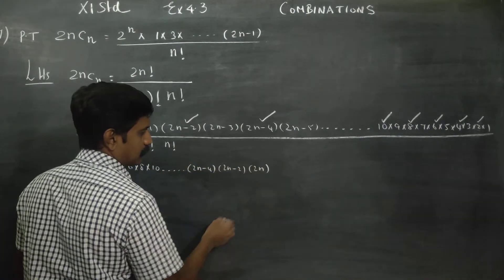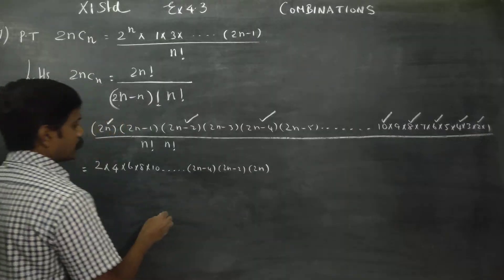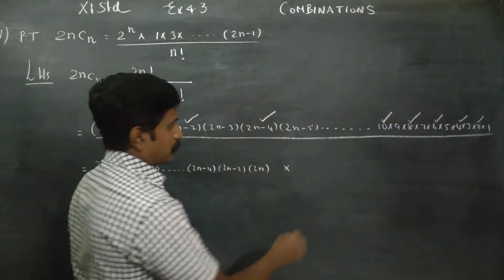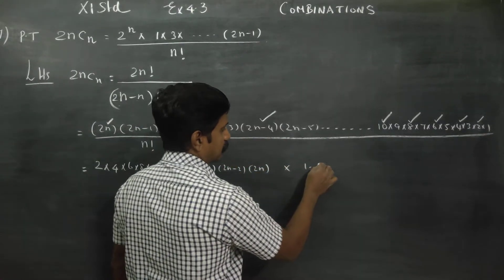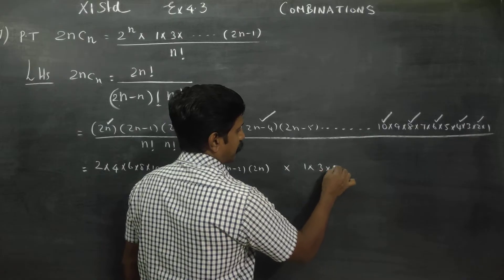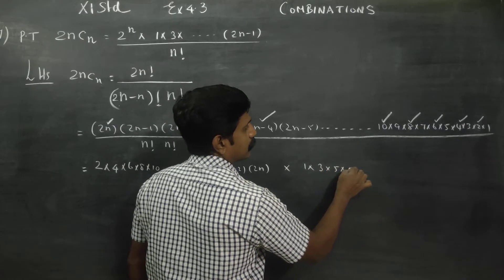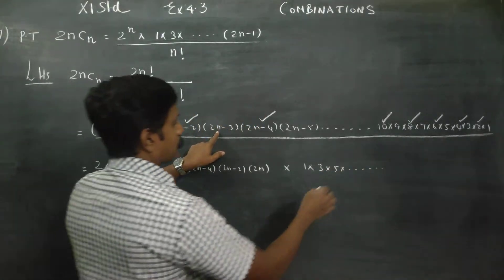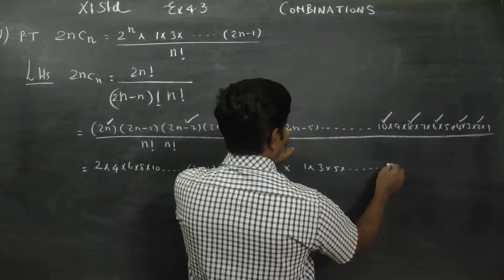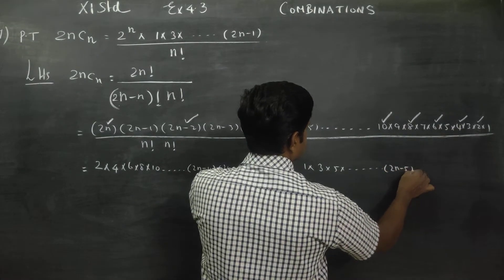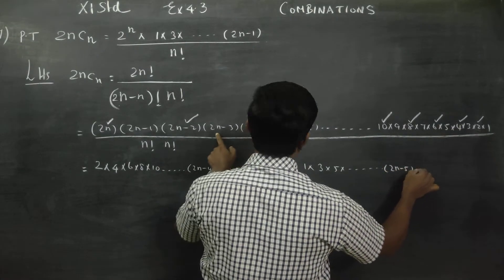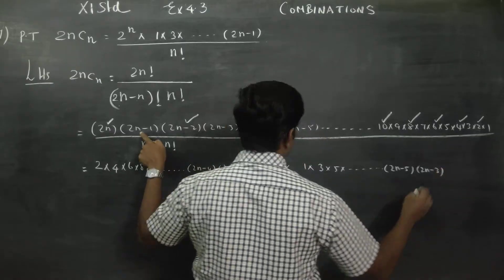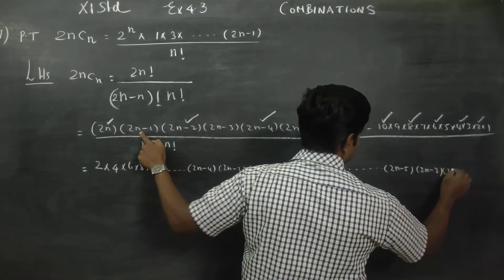Am I right? And in between, the odd numbers are: 1, 3, 5, dot dot dot, 2n minus 5, 2n minus 3, 2n minus 1. These are the odd number terms.